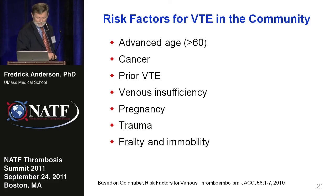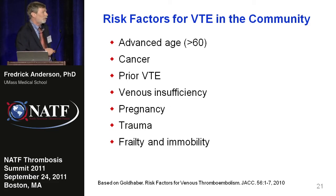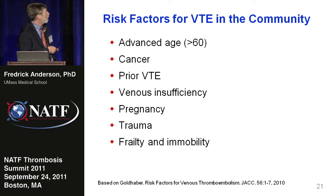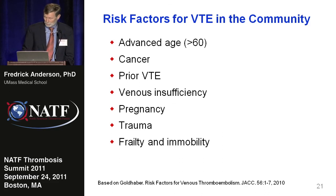When we look at a paper that Sam Goldhaber published in 2010 on risk factors in the community, out-of-hospital setting, the picture changes a little bit — it's a lot less helpful. We don't have odds ratios of 10. We start looking at people with older age, cancer, prior VTE — probably the most powerful one — venous insufficiency, pregnancy, trauma, frailty, and immobility. It's a challenge trying to identify community-dwelling patients well after discharge from hospital for major surgery or medical illness and their continuing risk.